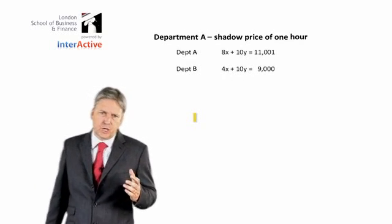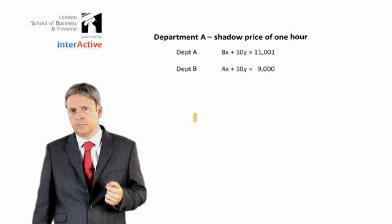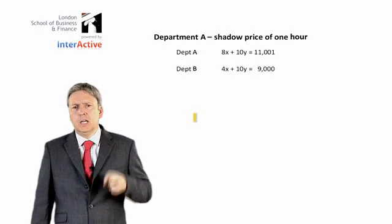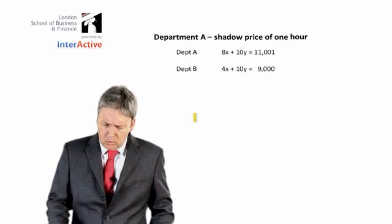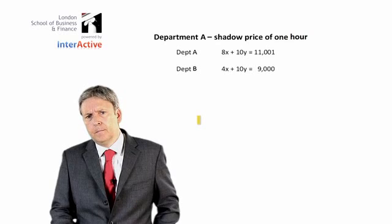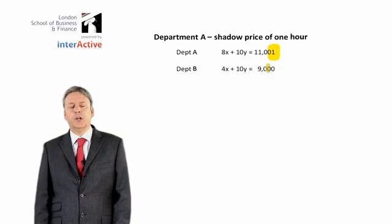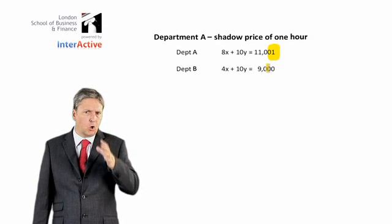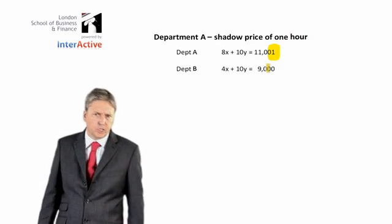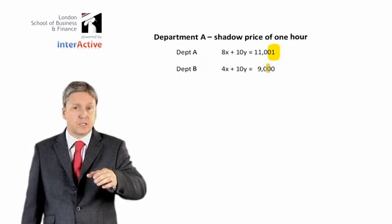To understand how the shadow price works, we have to remember that both department A and department B were binding constraints. What I want to know is what would happen if I have one more hour in department A. So all I've done is taken the original constraints that we had, but I've added one additional hour to department A. What I'm going to do is calculate the optimum solution with that one additional hour and compare that to the value I presently have.